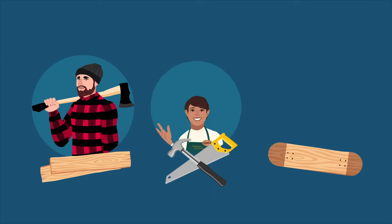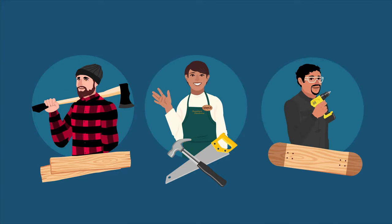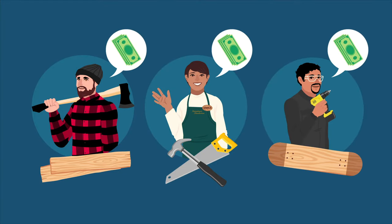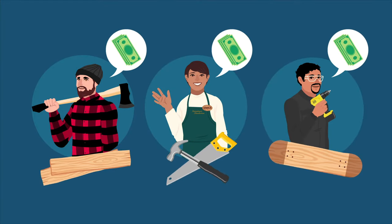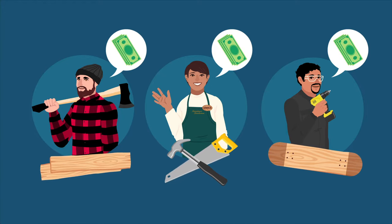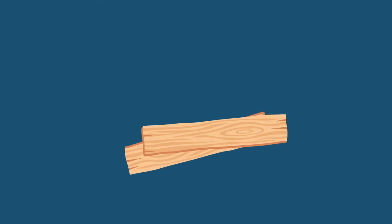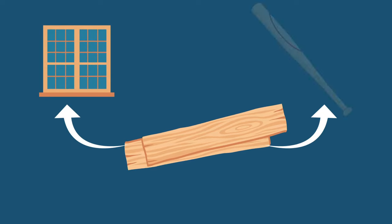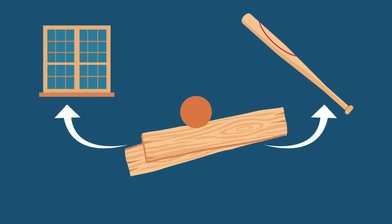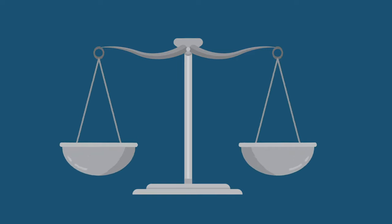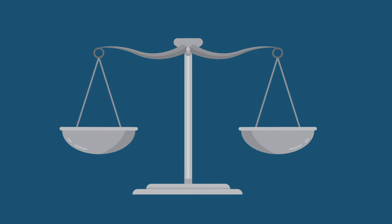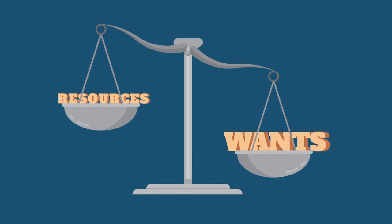The people who own the wood, the tools, and the labor want something in return for the use of their resources, because their resources could have been used in other ways. If the wood were not used to build skateboards, it might be used to build windows or baseball bats. So the first lesson is scarcity, which says that society does not have enough resources to produce all the goods and services that people want.